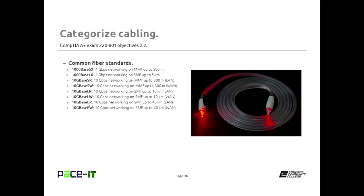An easy way to remember fiber types: if you see an S in the standard — as in SX, SR, SW — that S stands for short distance, which is multi-mode fiber. If you have an L — as in LX, LR, LW — that stands for long distance, which is single-mode fiber. And if you have an E — as in ER or EW — that stands for extended distance, which is also single-mode fiber. Multi-mode is short distance; single-mode fiber is long or extended distance.